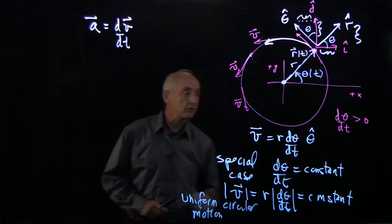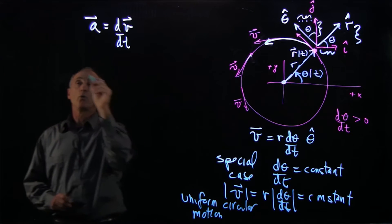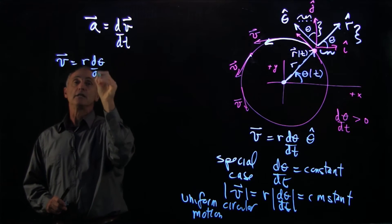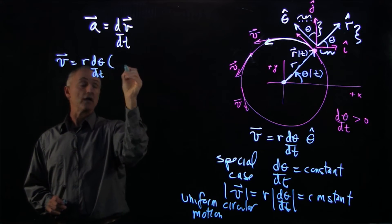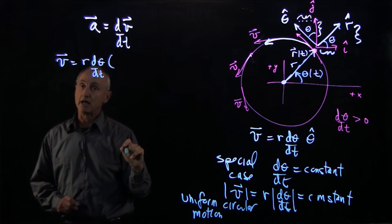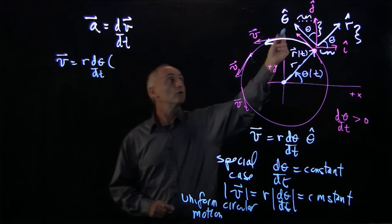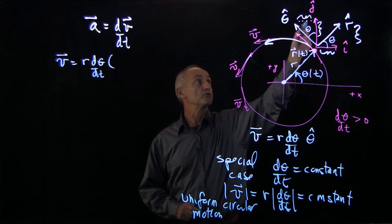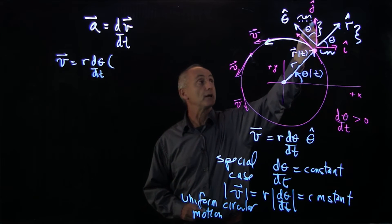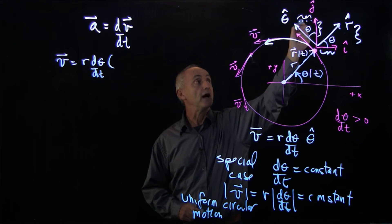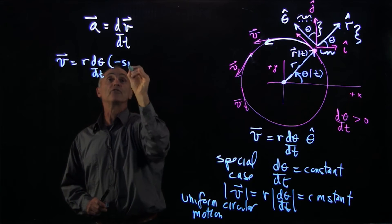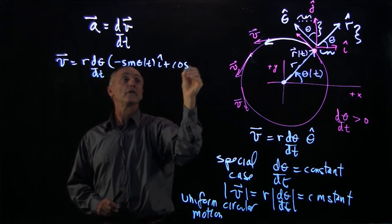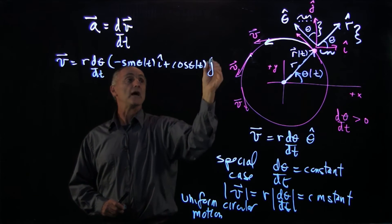How do we calculate the derivative of the velocity? Well, recall that the velocity vector r d theta dt, those are all constants, because it's in the theta hat direction. Once again, we'll decompose theta hat into its Cartesian components. You see it has a minus i hat component and a plus j hat component. The i hat component is opposite the angle, so we have minus sine theta of t i hat plus cosine theta of t j hat.